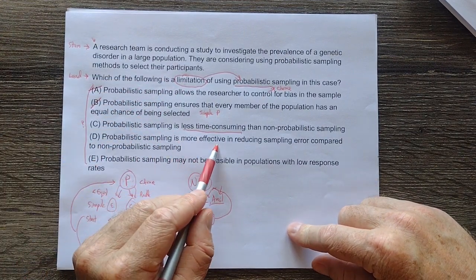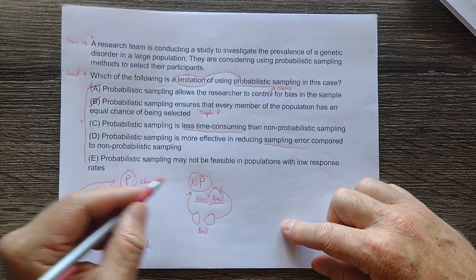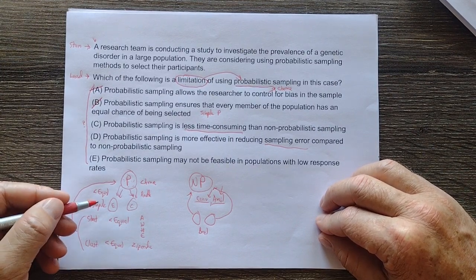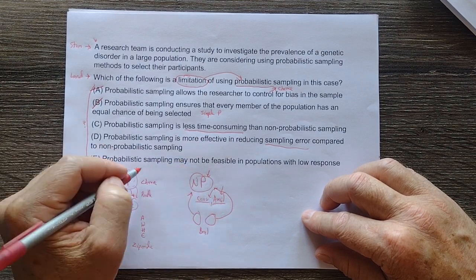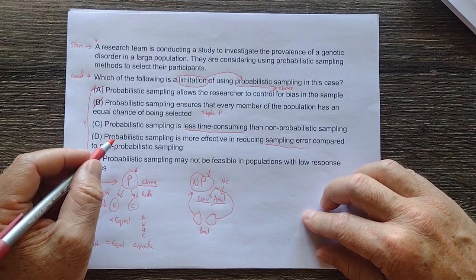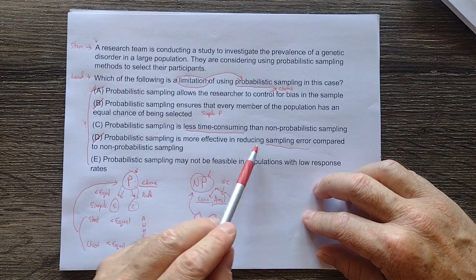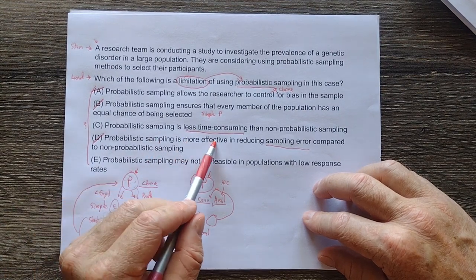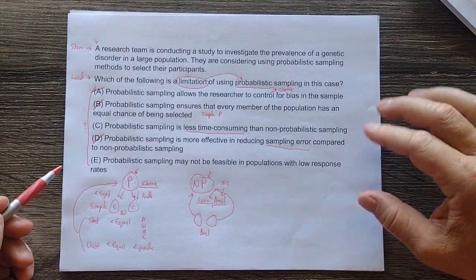So probabilistic sampling is more effective in reducing sampling error compared to non-probabilistic. So sampling error can happen in both probabilistic and non-probabilistic for very different reasons. But is it more likely to have sampling error in probabilistic versus non-probabilistic for using chance versus not using chance? I think that this is one of the benefits and not a limitation. So probabilistic sampling doesn't always prove more effective in reducing sampling error. But because it does use chance, it is often more effective in reducing sampling error because we end up with balanced groups more often than we end up with balanced groups and non-probabilistic.